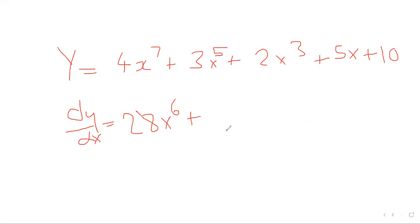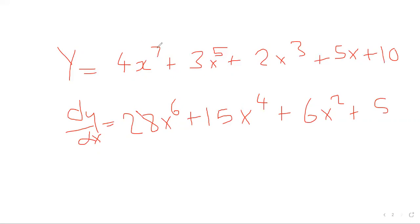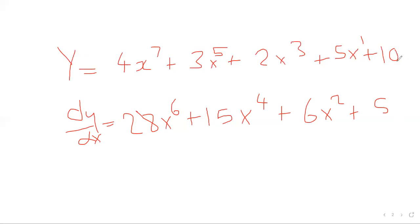For x to the power three, we get x to the power four. We multiply the coefficient by the power and subtract one from the exponent. So 15 minus one, six minus one. One times five is 5, one minus one is zero, so the ten goes out as a constant.